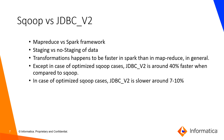Except in cases of optimized Sqoop, JDBC v2 is usually 40% faster compared to Sqoop. Only in cases of optimized Sqoop is JDBC v2 slower than Sqoop, by around 7 to 10 percent.